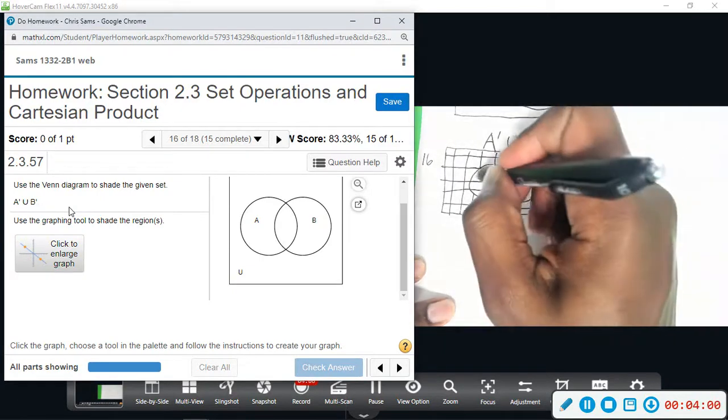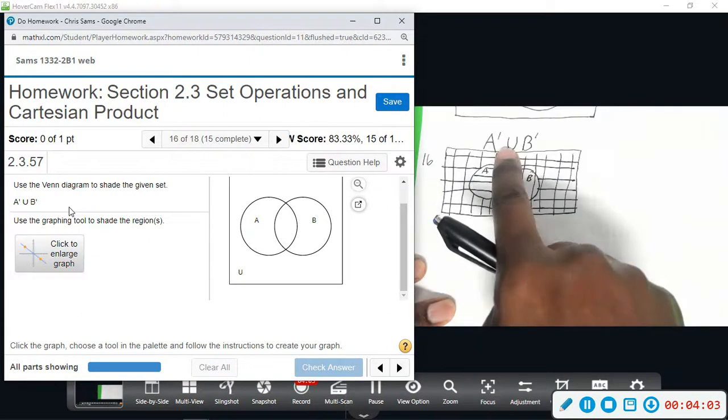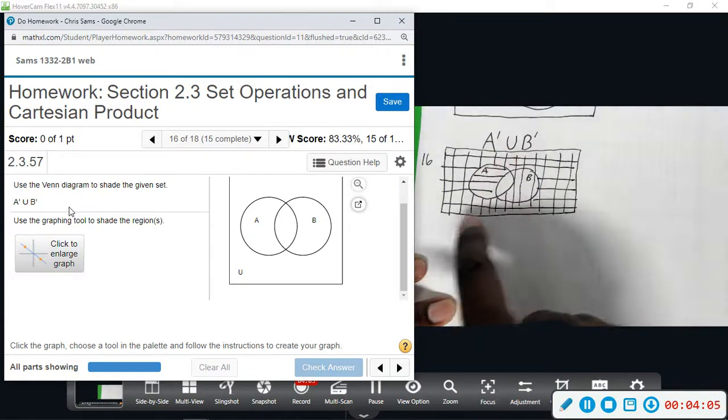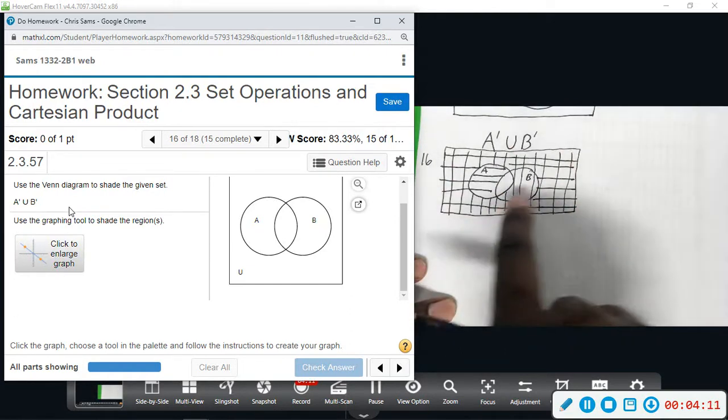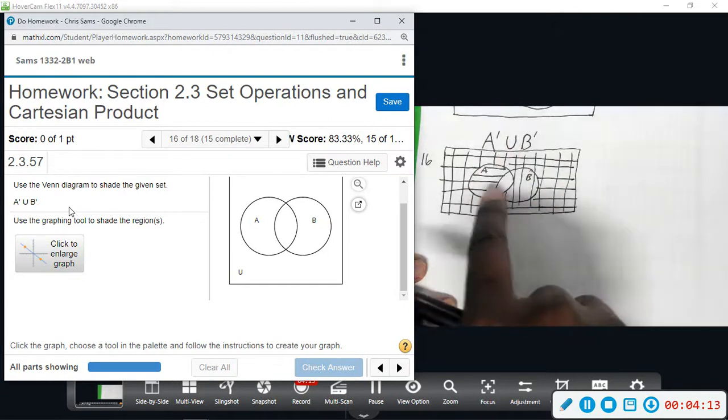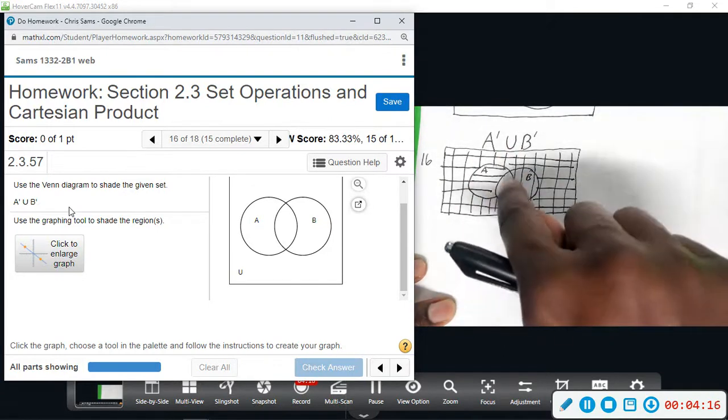So everything that is shaded, you take with union. So part of it only has horizontal lines, part only has vertical lines, some has both horizontal and vertical, but union says we want everything to shade it. So we're going to take everything except for the middle.